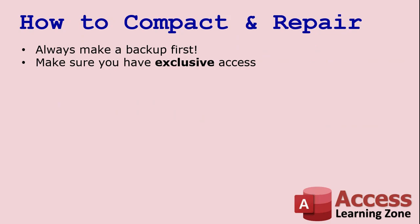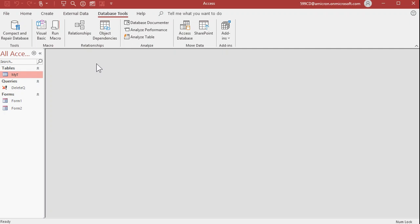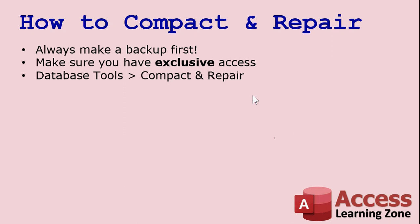Next, make sure you have exclusive access to the database — make sure no one else is logged in. You have to be the only one in the database to compact and repair it. So if this is the database that your whole network runs on, do it on a Sunday when no one's working. Doing this is as easy as opening up the database, going to Database Tools, then Compact and Repair. If you want to bypass the startup form, hold down the shift key when you open the database. Then Database Tools, Compact and Repair. That's it. Access will copy your database objects into a new database file, delete the old one and rename it automatically, so you get a fresh clean file.